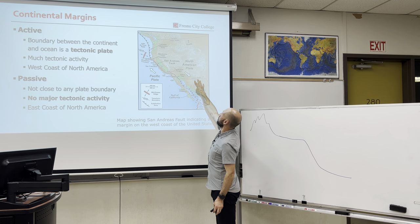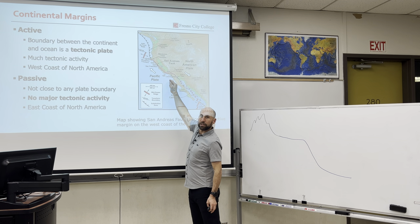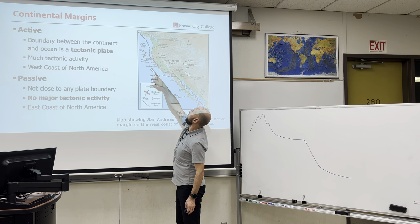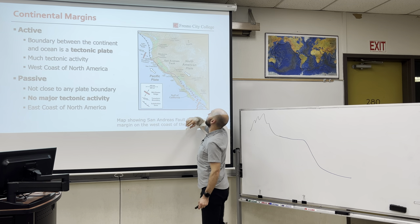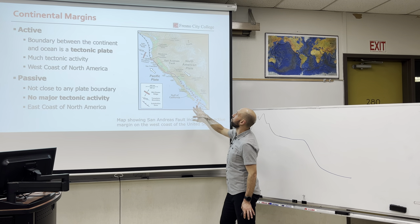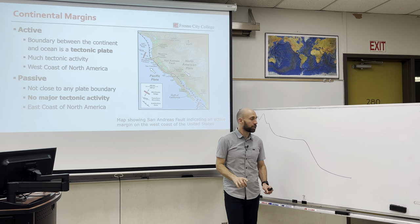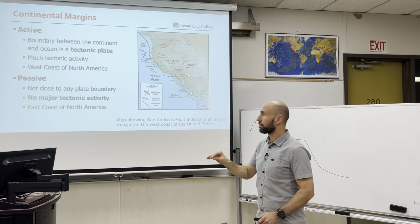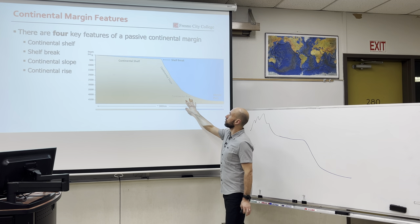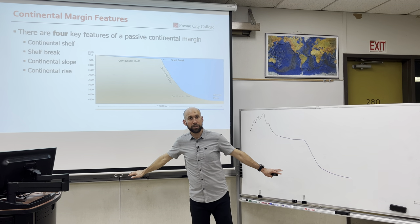North America and the Pacific Ocean is an active continental margin because through California we have the San Andreas Fault, above we have the Juan de Fuca plate that's subducting into the North American plate, and below us we have the Cocos plate and the Nazca plate even below that. This tectonic activity creates an additional feature for our continental margin — an oceanic trench. Let's talk about the four key features of passive continental margins, meaning no tectonic boundary.